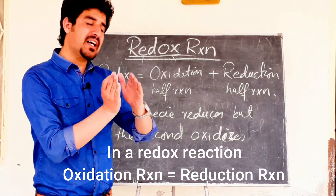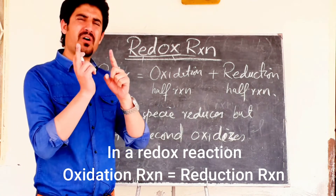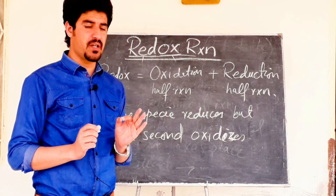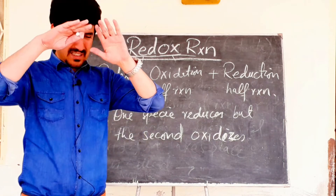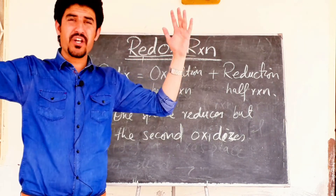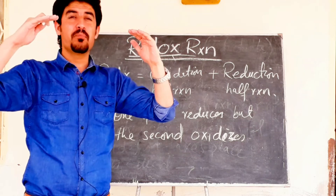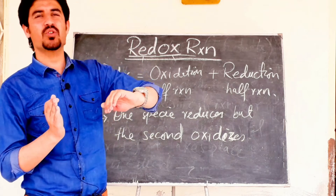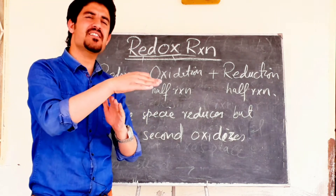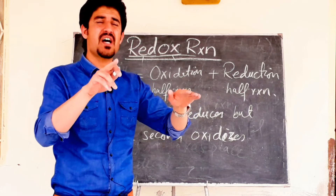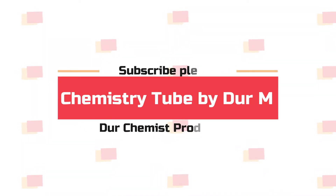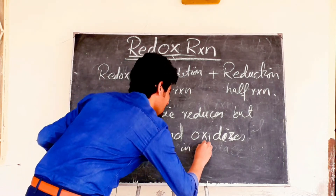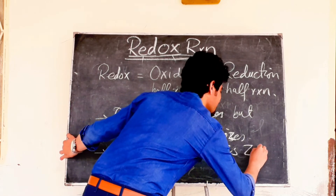As much as one species is being reduced, the other species is being oxidized by the same amount. One species' oxidation state is increasing while the other's is decreasing. Remember: in a redox reaction, the overall net oxidation state of the whole reaction has no change. The net change in oxidation state is zero. One's oxidation state increases and the other species' decreases by the same amount, so the net change in oxidation state is zero.